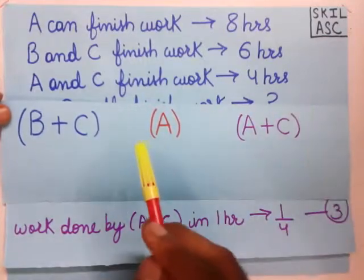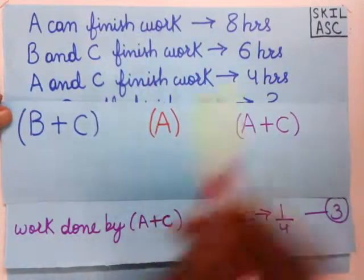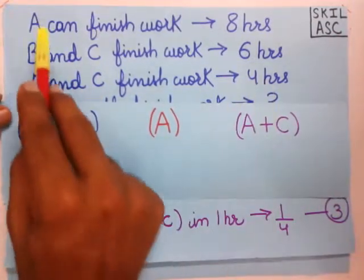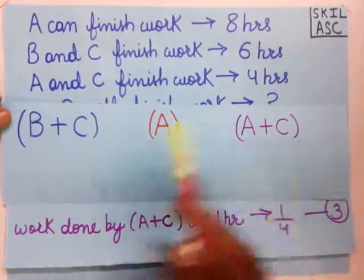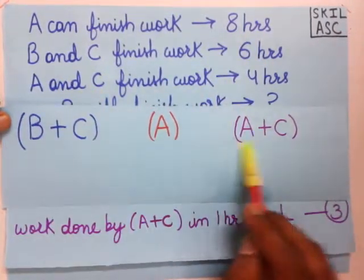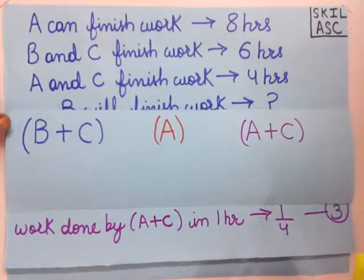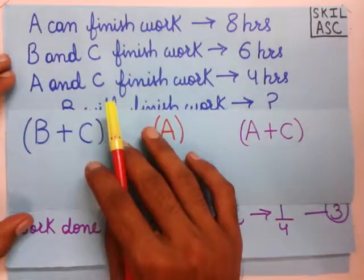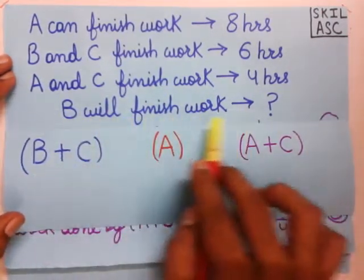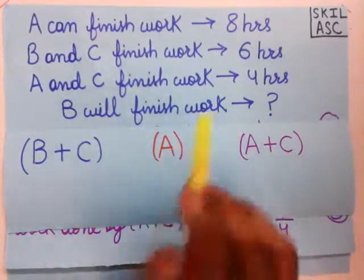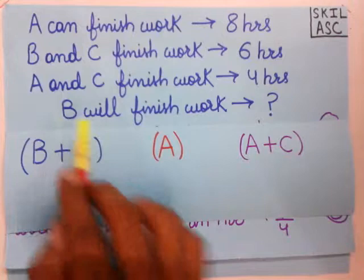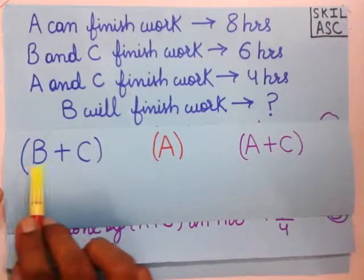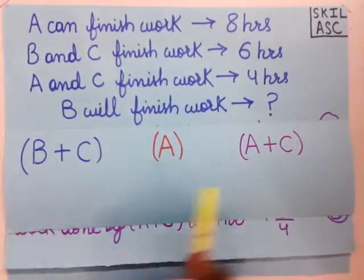Now I have written all the letters from all three statements: B plus C from the second, A from the first, and A plus C from the third. In the question we have to find how long B will take — so we need only B. We don't need A and C.